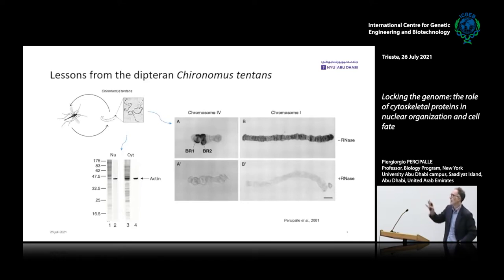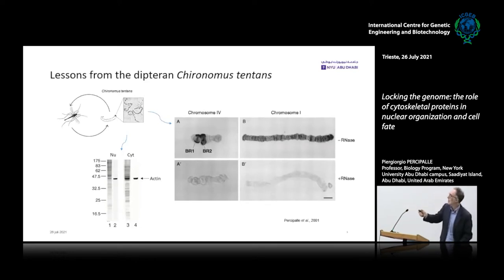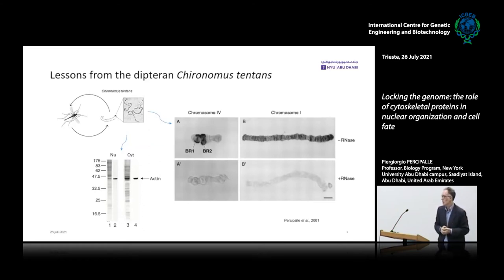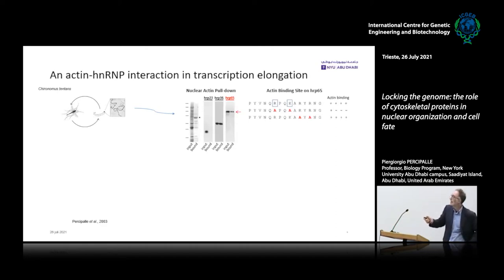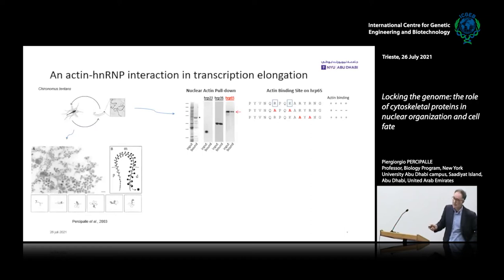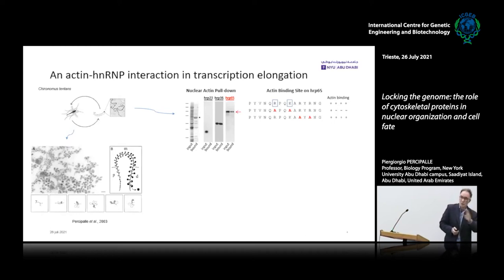We performed cryo-immune electron microscopy and demonstrated that actin associates with the nascent RNP and accompanies the RNP all the way to polysomes, bound to a subset of heterogeneous nuclear ribonucleoproteins. In a subsequent paper, we mapped one of the proteins — an HNRnP in Chironomus — as a direct interactor with actin. We mapped the binding site and showed by transmission electron microscopy that both actin and HRP65 co-localize with nascent RNP particles.